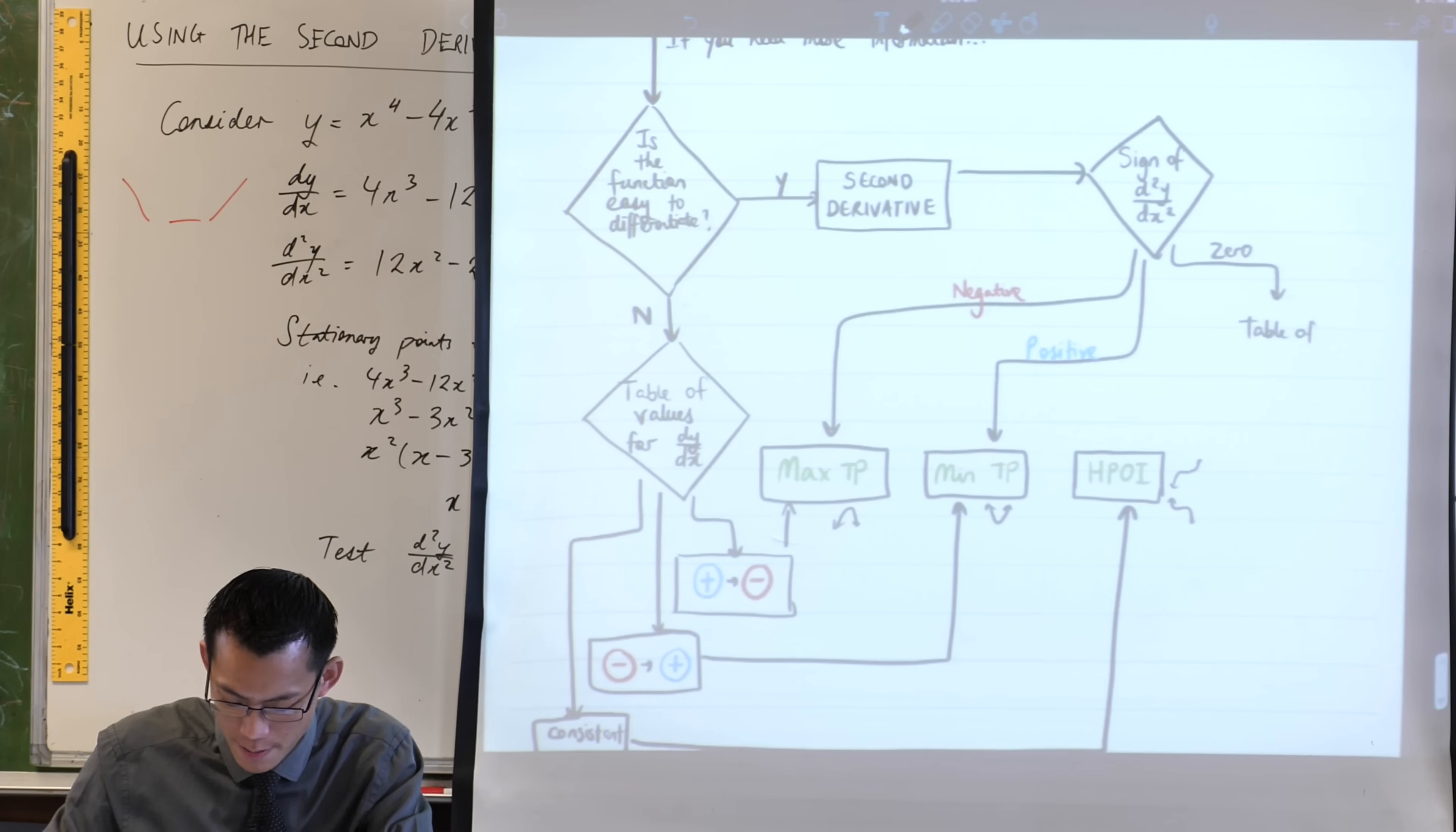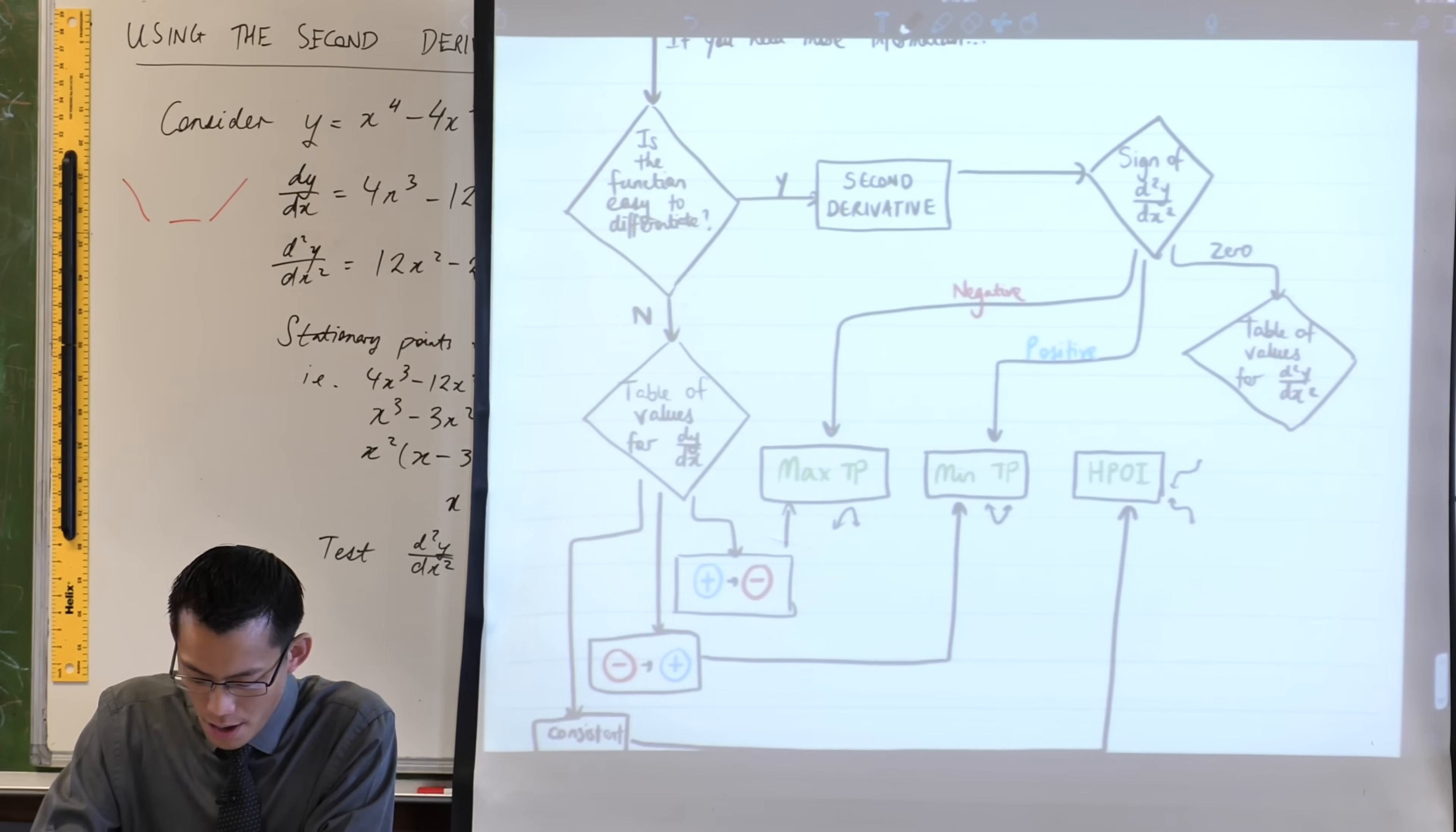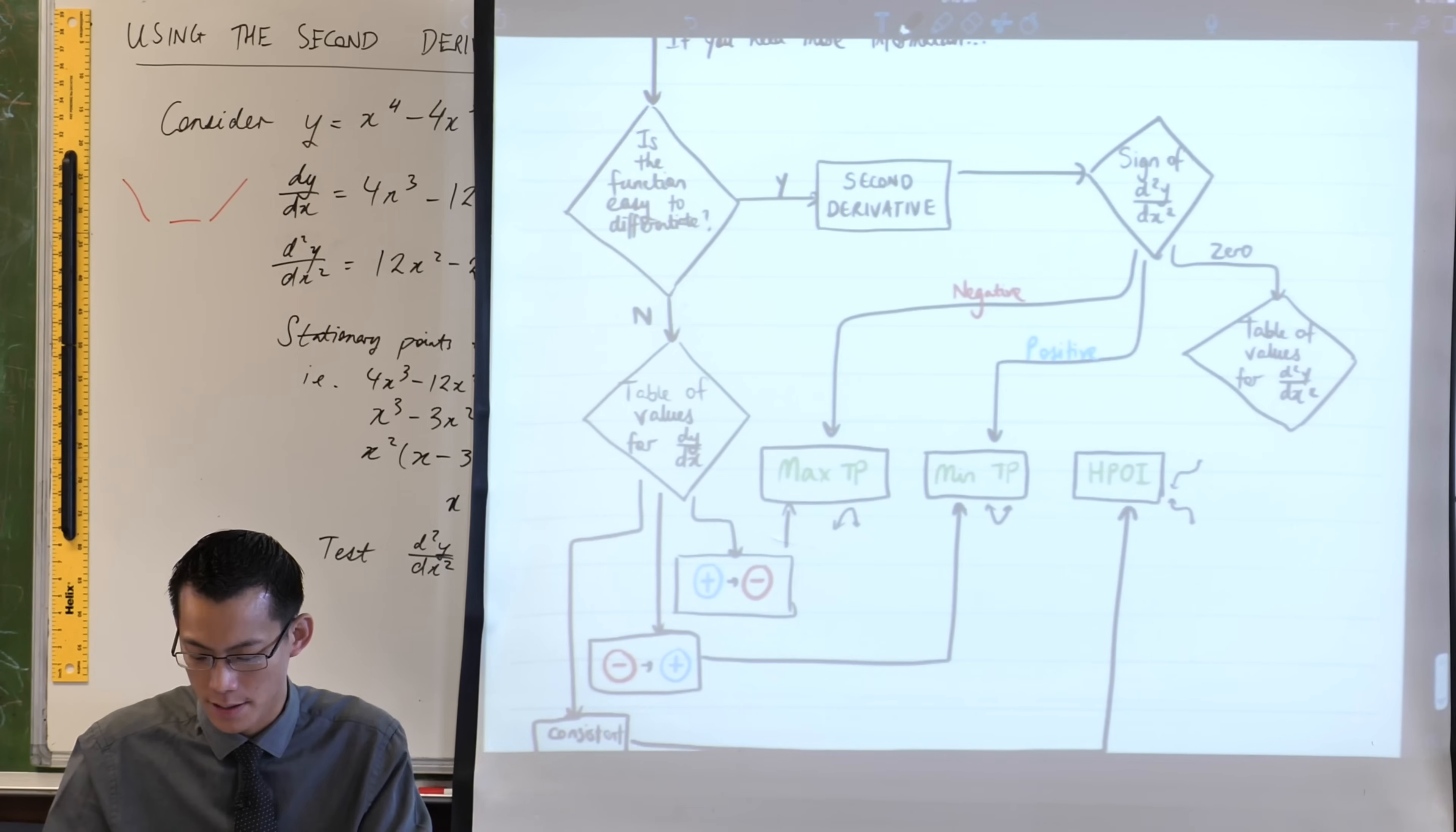But this time it's a table of values for the second derivative. Because you're not sure what you're going to get out of this, there's a choice. If you get your table of values, then a bunch of different things will happen. We already know, by the way, that this is a stationary point. We're just trying to work out what kind of a stationary point it is.